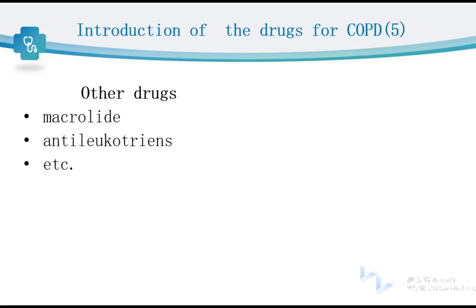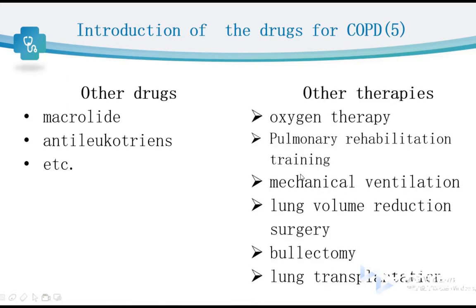Other drugs for COPD include macrolides, which reduce bronchial inflammation, and antileukotriene agents, among others. Other therapies for COPD include oxygen therapy, pulmonary rehabilitation training, and mechanical ventilation. Surgery is sometimes required for special patients — for example, lung volume reduction surgery for patients with extensive bullae, and lung transplantation for patients with severely impaired lung function.